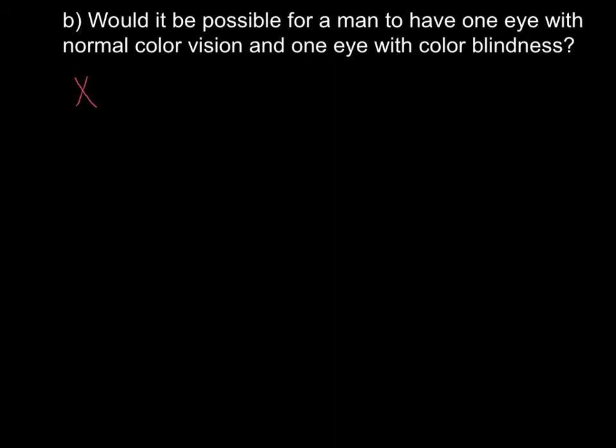The second question: would it be possible for a man to have one eye with normal color vision and one eye with colorblindness? Normally this is not possible, because a male has only one X chromosome — if that X carries the defective gene, both eyes would be affected. So how could this happen?